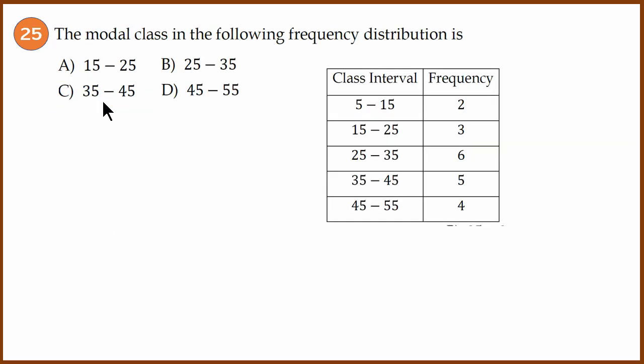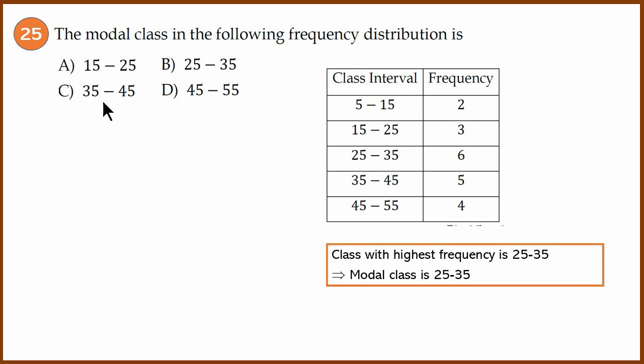The modal class in the following frequency distribution: the class with the highest frequency is 25 to 35, with frequency 6, and hence the modal class is 25 to 35. The answer is B.